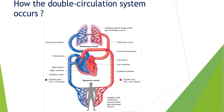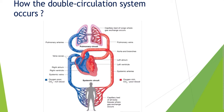The semilunar valves open and the ventricles contract together. The left ventricle pressurizes and pumps the oxygenated blood out through the aorta, passing through the aortic valve. Similarly, the right ventricle pumps the deoxygenated blood toward the lungs, passing through the pulmonary valve.